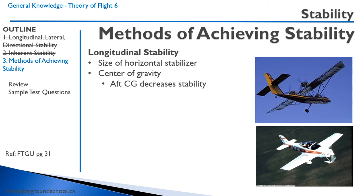Compare these two aircraft. On the top we have a Lockwood Aircam, which looks like an ultralight but is not — it's about as heavy as a Cessna 172, twin-engine, and built really robustly. It's a very stable platform, and part of that stability is because of the size of the horizontal stabilizer — look at how big those vertical and horizontal stabilizers are compared to the rest of the aircraft. On the bottom, we have a Smith Sidewinder, a home-built sport plane, with a very small horizontal stabilizer because the emphasis on that design is on maneuverability and not on stability.